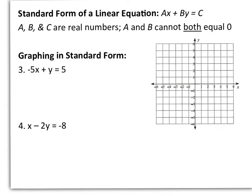Another form of linear equations is standard form, and that's the form Ax plus By equals C, where A, B, and C are real numbers, and A and B cannot both equal 0. When we are given equations in standard form, the easiest method to find our points for graphing is to find our x and y-intercepts.